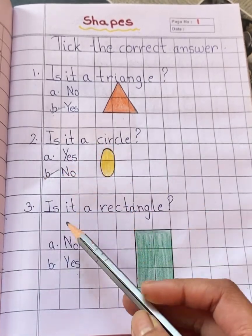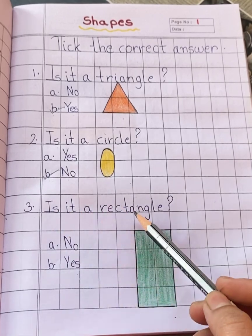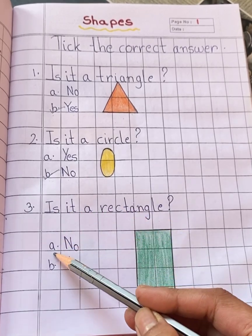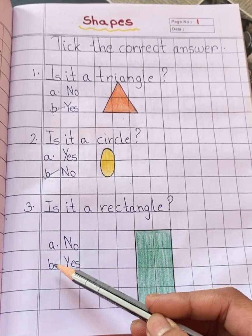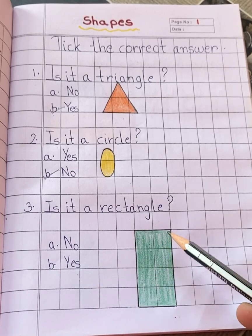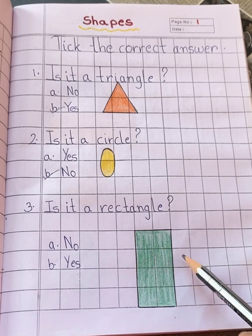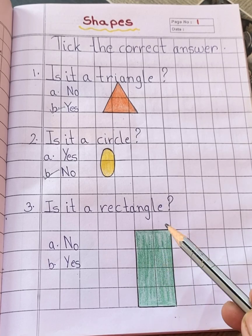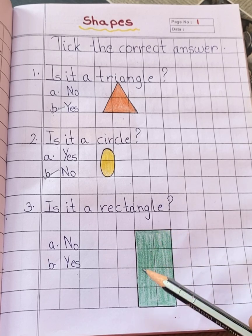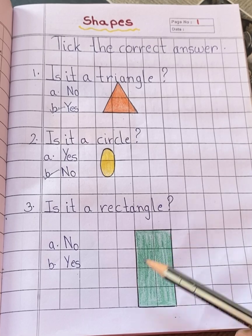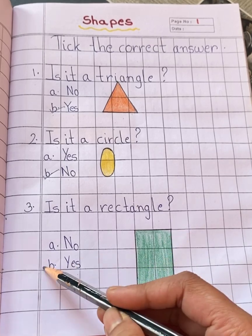Next question is: is it a rectangle? Option A, no. Option B, yes. Children, a rectangle has two equal sides opposite to each other. So it is a rectangle shape. Yes, so take yes.